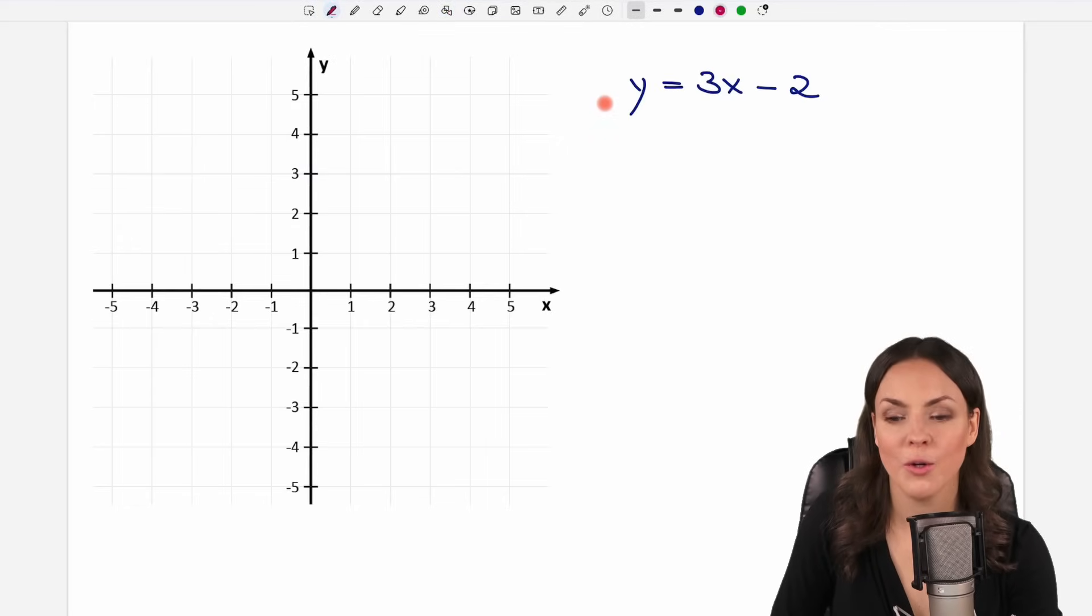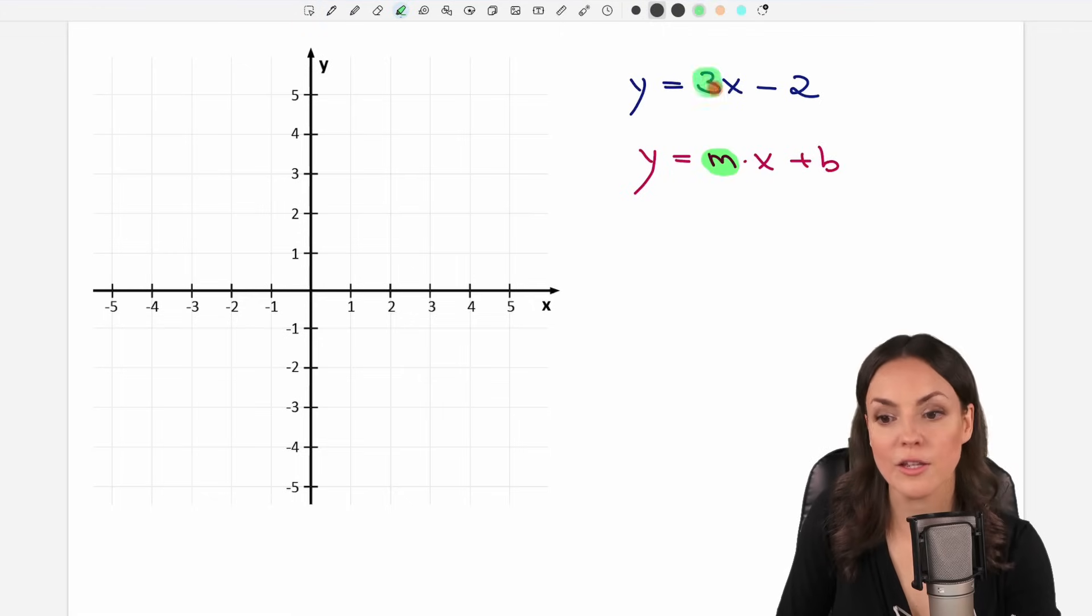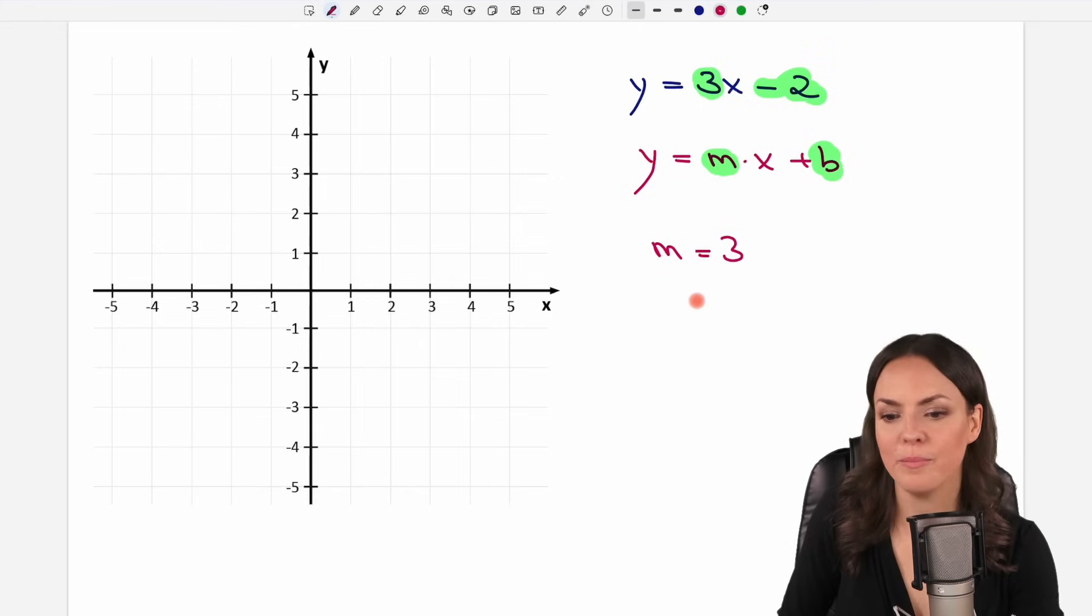Let's take a look at the second example. We have to graph this linear function here. It is again perfectly in the slope intercept form because we have y equals m times x plus b. m is the number in front of the x, so it is a 3 this time. m equals 3. And b is the number here without the x. But be careful with the sign. So plus b would be our b. But if you have a negative two here our b is negative as well. So it is negative two. But the rules are the same. We start with our b.